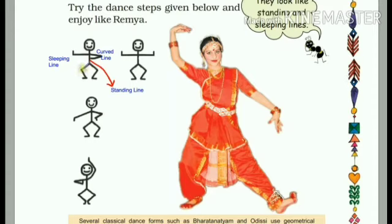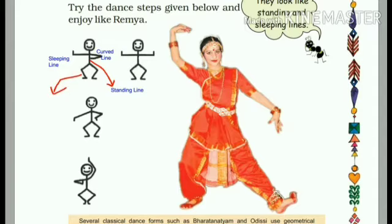Now here is his leg — which line is there? It looks like a slanting line. So we have to write here a slanting line. See the other figures and find out the sleeping lines, standing line, curved line, and slanting line.